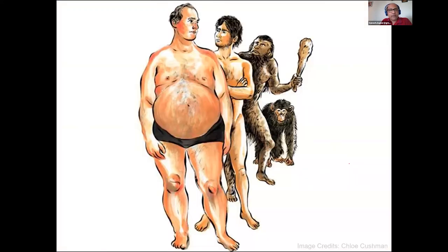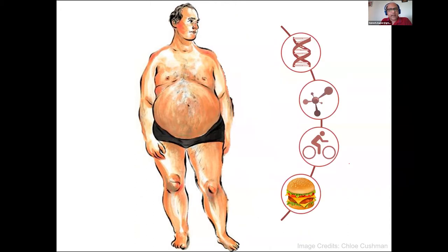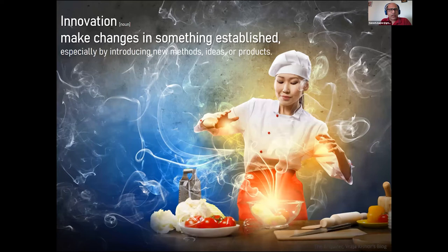Having evolved to this extent — from primitive species to homo sapiens — ironically, we have reached a stage plagued by an epidemic of lifestyle disorders such as obesity, type two diabetes, and cardiovascular disorders. While genetics, social factors, and sedentary lifestyle are all contributing elements, food is a key component behind this epidemic of lifestyle disorders.